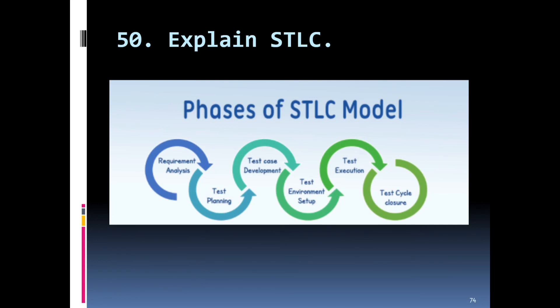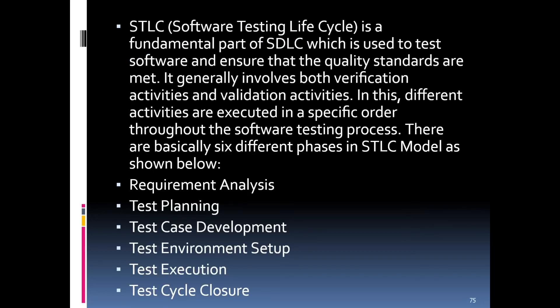The last question of this video is: explain STLC. The Software Testing Life Cycle is a fundamental part of the QA process used to test software and ensure quality standards are met. It involves both verification and validation activities executed in a specific order. There are six phases: requirement analysis, test planning, test case development, test environment setup, test execution, and test cycle closure. More details will be covered in the next video.